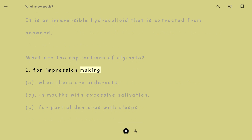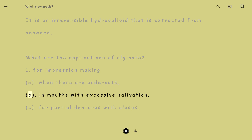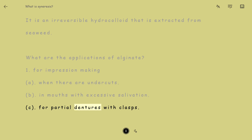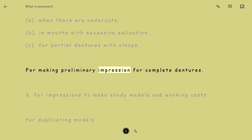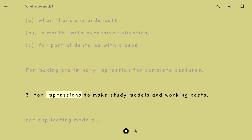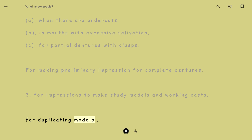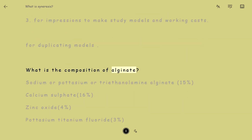Applications of Alginate: 1. For impression making — (A) when there are undercuts, (B) in mouths with excessive salivation, (C) for partial dentures with clasps. 2. For making preliminary impressions for complete dentures. 3. For impressions to make study models and working casts. 4. For duplicating models.